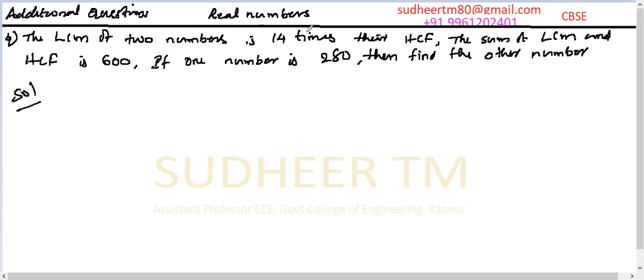Since it's given that LCM is 14 times their HCF, we'll assume HCF is equal to X. Then, LCM of two numbers is 14 times their HCF, so LCM is equal to 14 times X, or 14X. Also it is given sum of LCM and HCF is 600, so...